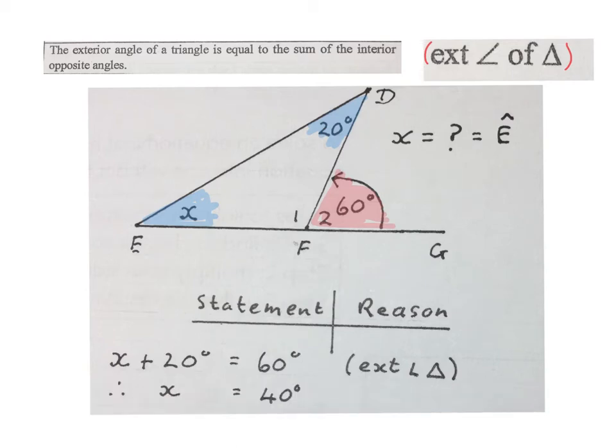The answer is X equals to 40 degrees. You can also say angle E is 40 degrees. And I like to fill it in on the sketch in case we need it. Please stop the video and get your brain around the solution.